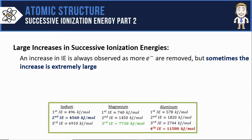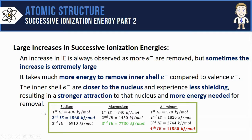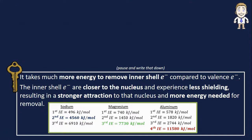Let's summarize by saying that it takes much more energy to remove inner shell or core electrons compared to valence electrons. That's because those inner shell electrons are closer to the nucleus and experience less shielding, resulting in a stronger attraction to that nucleus and more energy needed for removal. These are the key ideas for the video, so make sure you take some time to write them down.